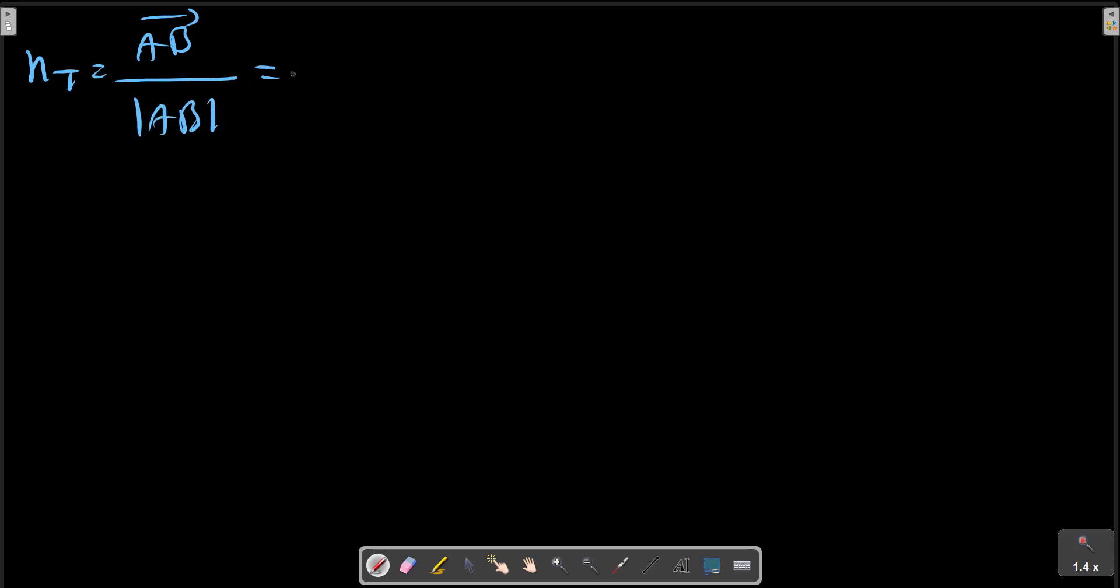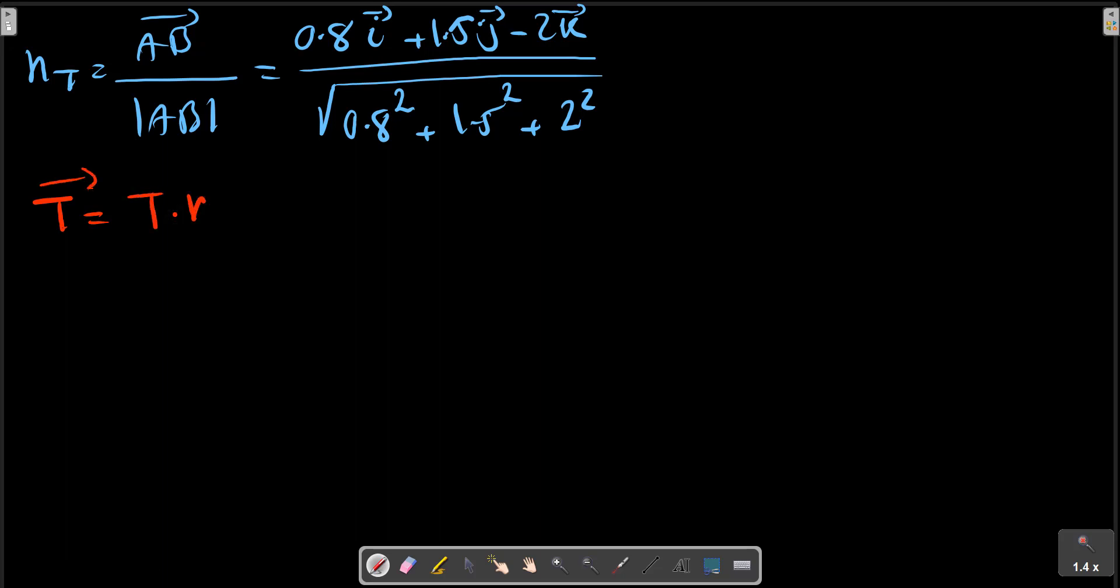Divide by the magnitude of AB. So T equals to |T| times n_AB.